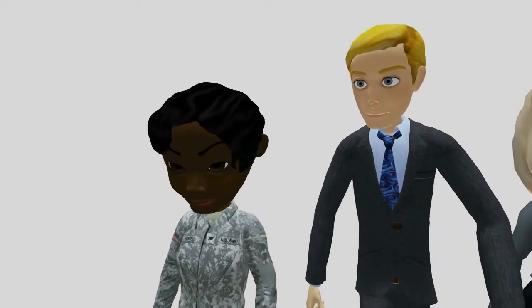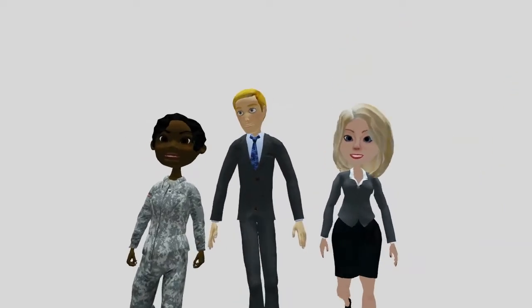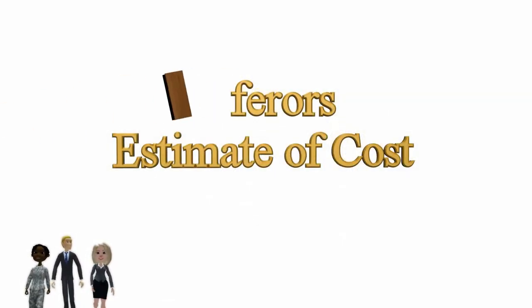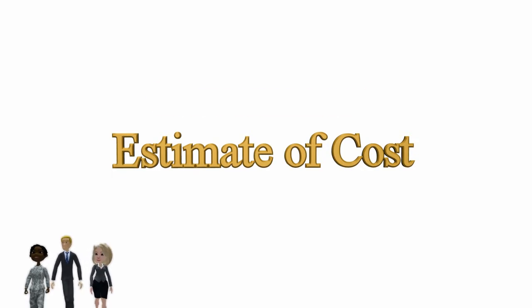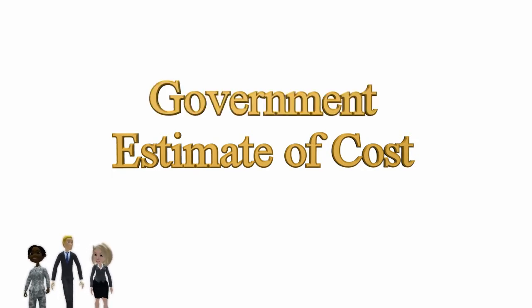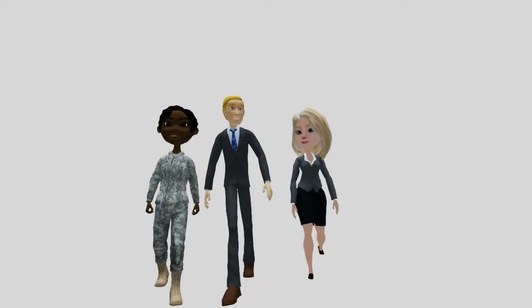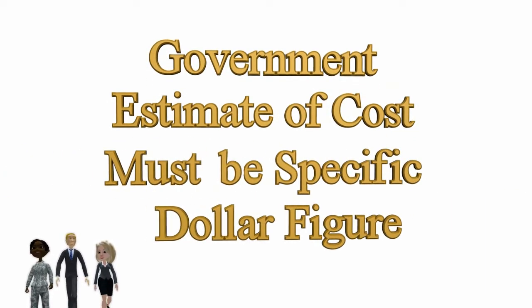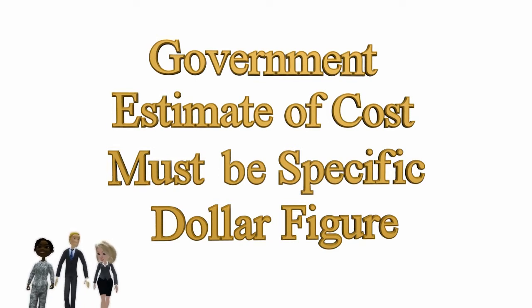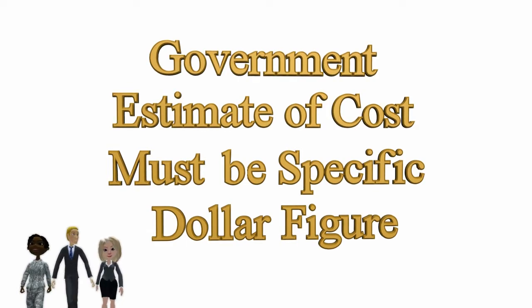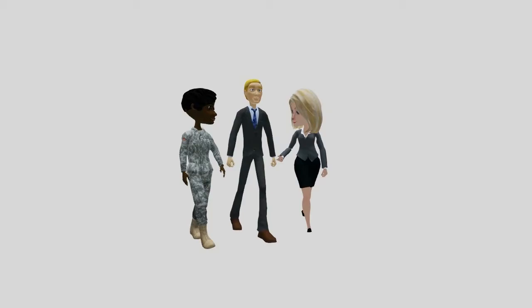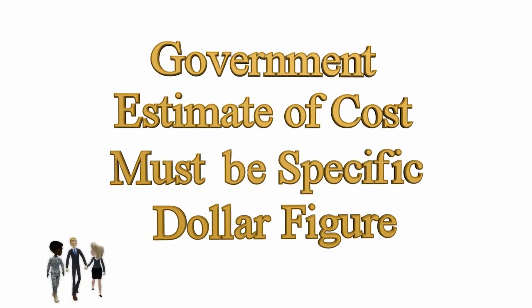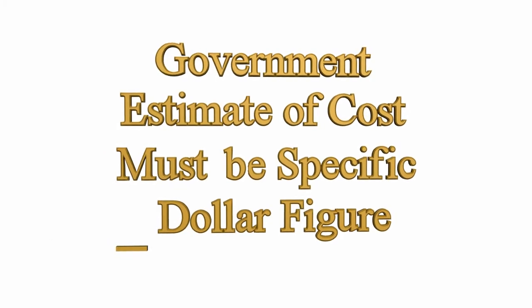Do we still have non-binding cost estimates we are going to use in our source selection decision? Yes, you still have estimates. But the end result of the cost realism evaluation is supposed to be an estimate by the government evaluators using their own informed judgment — as opposed to just relying on the offeror's estimate — of what the actual cost obligation of the government will most likely be if that particular offeror receives the award. That dollar figure is usually called the probable cost. Always remember that a conclusion that cost is unrealistic is not by itself a sufficient end result — the probable cost figure must also be determined.